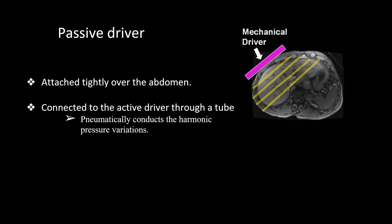The passive driver should be attached over the patient's body along the right lobe of the liver, so that most of the waves can go into the liver. It is attached tightly over the abdomen along the right side.